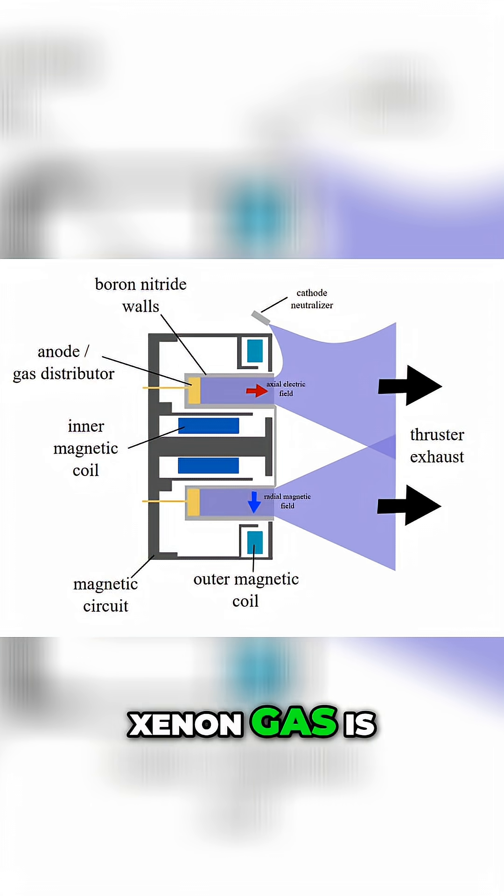In an ion thruster, xenon gas is fed into a chamber where electrons from a cathode knock electrons off the xenon atoms, turning them into positive ions.